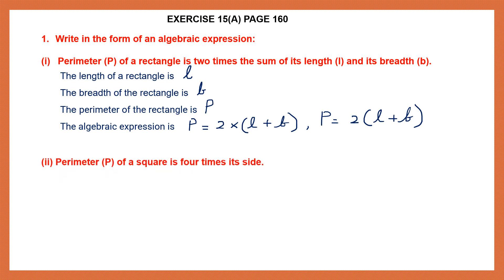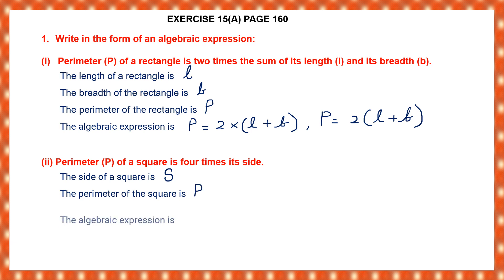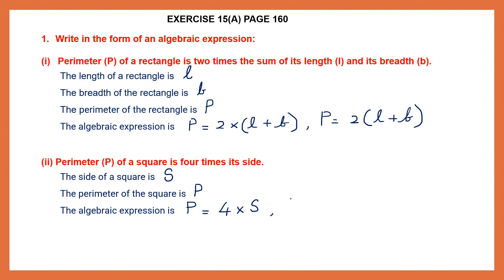Question 2: The perimeter of a square is 4 times its side. Let the side of the square be S and the perimeter be capital P. So the algebraic expression is P = 4 × S, or removing the multiplication sign, P = 4S.